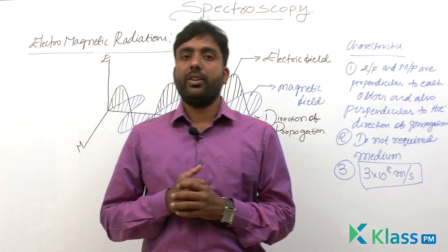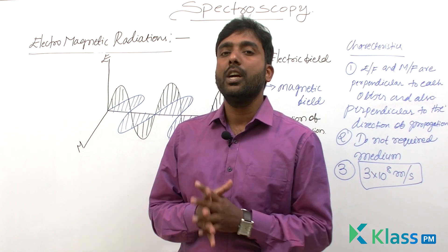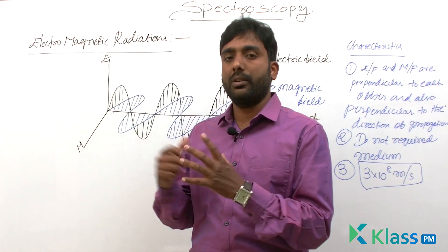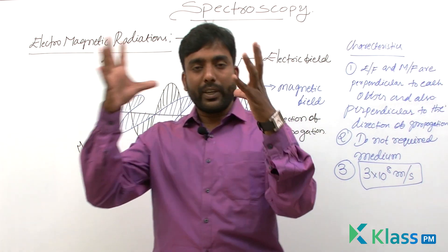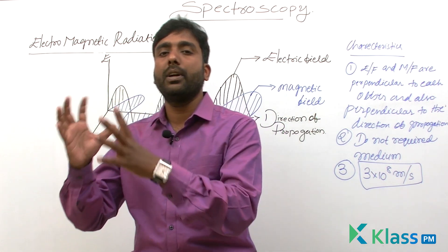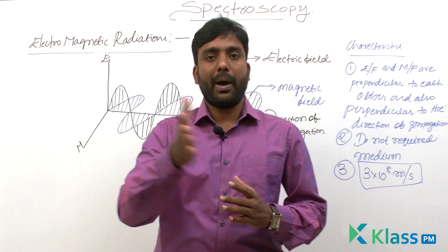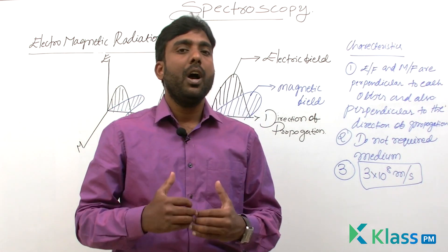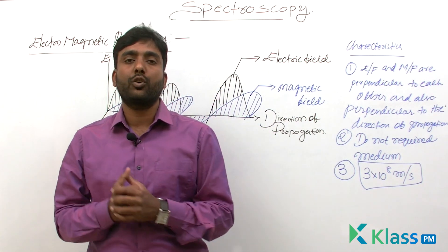Now, there are certain parameters to describe electromagnetic radiation, and in our next class we need to study what those parameters are. Just as you describe a person using height, weight, and complexion, or give an address using specific parameters, there are certain parameters needed to understand and describe electromagnetic radiations. We will see those parameters in our next class.